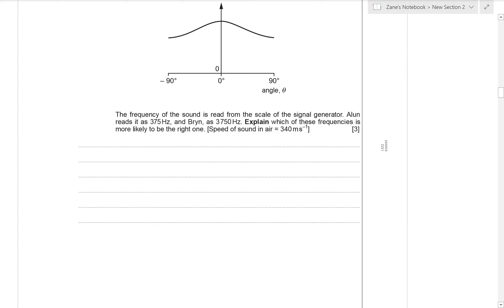Now Alan and Bryn have read the signal generator's frequency differently. Alan thinks it's 375 hertz and Bryn thinks that it's 3,750 hertz. And we've got to use this fact about diffraction to work out which student is right.